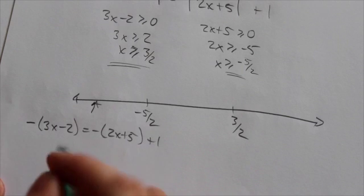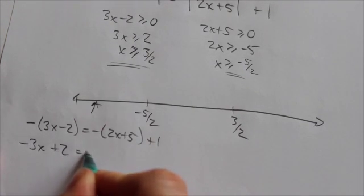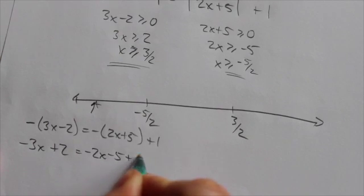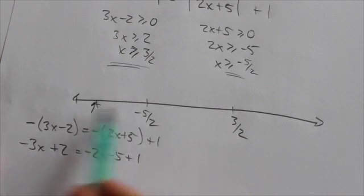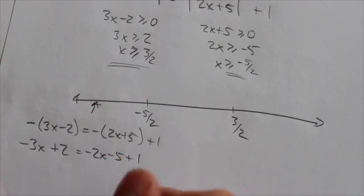That's how we get rid of those absolute value signs and now we get negative 3x plus 2 is equal to negative 2x minus 5 plus 1. That's only here, because both of those functions are going to be negative behind negative 5 halves here.